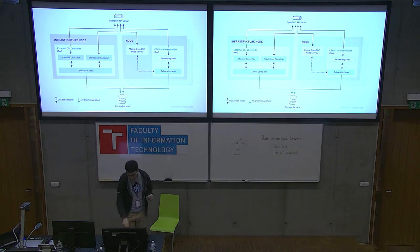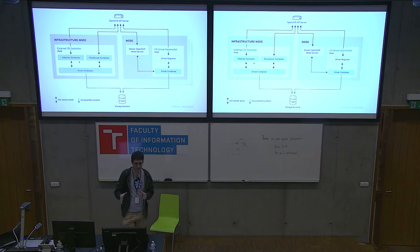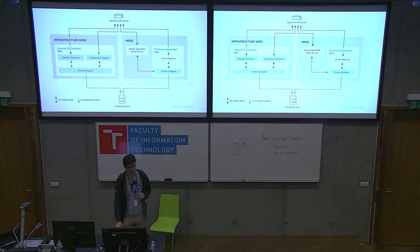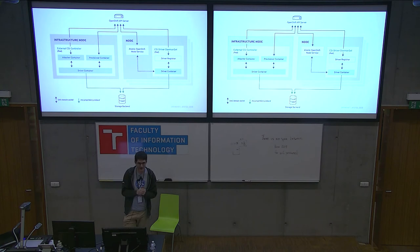So you run a daemon set that installs the driver registrar and the driver on each node to have CSI. And somewhere in the cluster, you need to run a pod with the external attacher and external provisioner, which talk to their copy of the driver. That's the complexity — you need to run external components, you need to know what they do and why they are there, and if something happens, where to look.